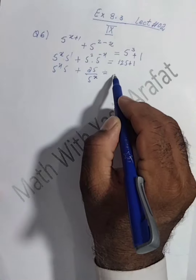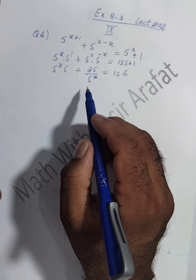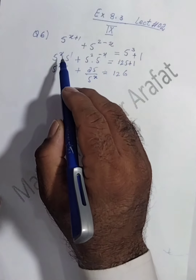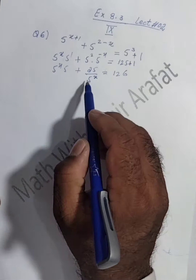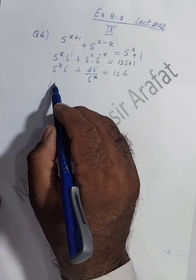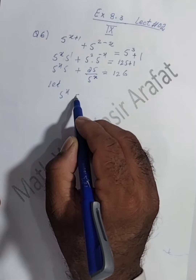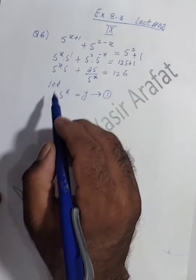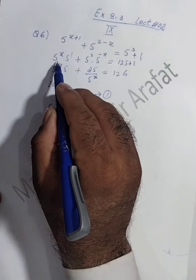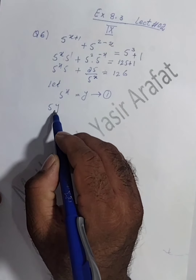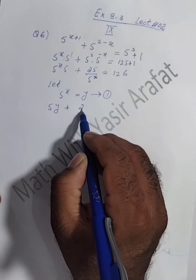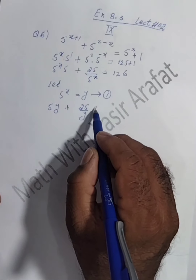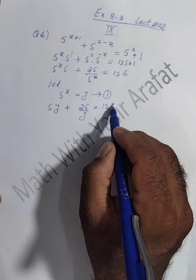Now what is the rule to find the solution of exponential type equations? We have to make x single and in positive form. We suppose 5 power x equals y — call this equation number 1. So the equation becomes: 5y + 25 over y = 126, because 5 power x equals y.